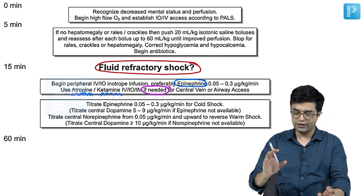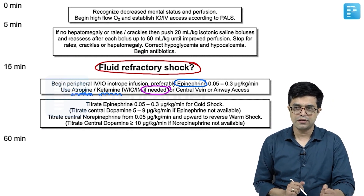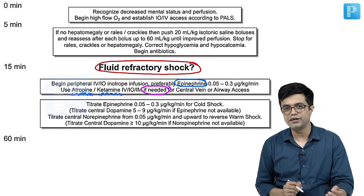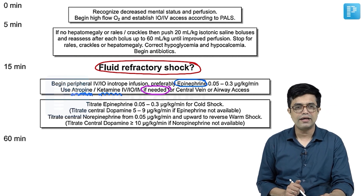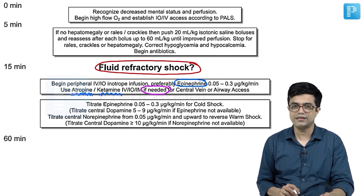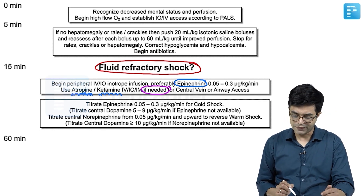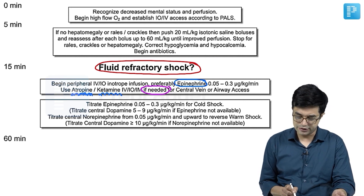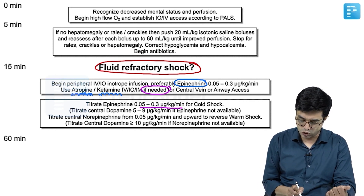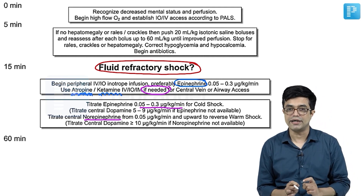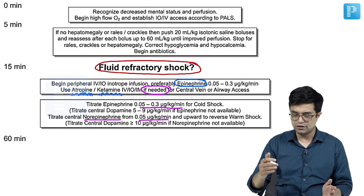Some experienced clinicians still feel norepinephrine is better than epinephrine, and these guidelines indirectly acknowledge that. In cold shock, you would start epinephrine and titrate between 0.05 to 0.3 microgram per kg per minute. In warm shock, an alternative option is to add norepinephrine, which should ideally be given through central venous access because norepinephrine can cause strong peripheral vasoconstriction. The dose is again 0.05 microgram per kg per minute, titrated upward. If epinephrine or norepinephrine at 0.3 microgram per kg per minute still does not improve shock, consider catecholamine-resistant shock.